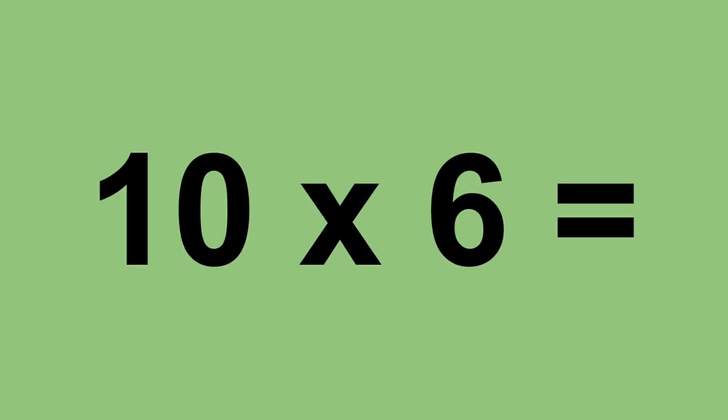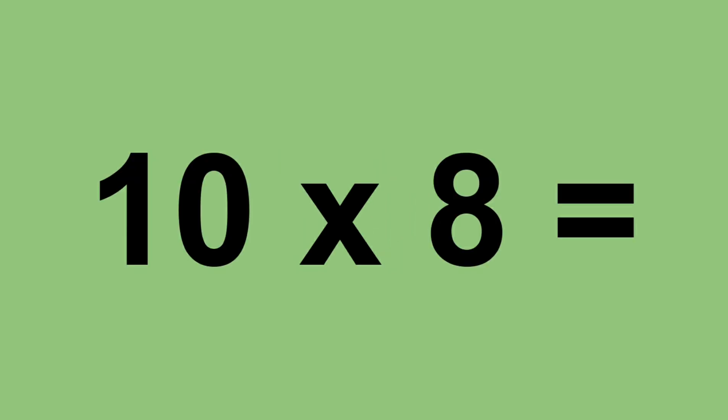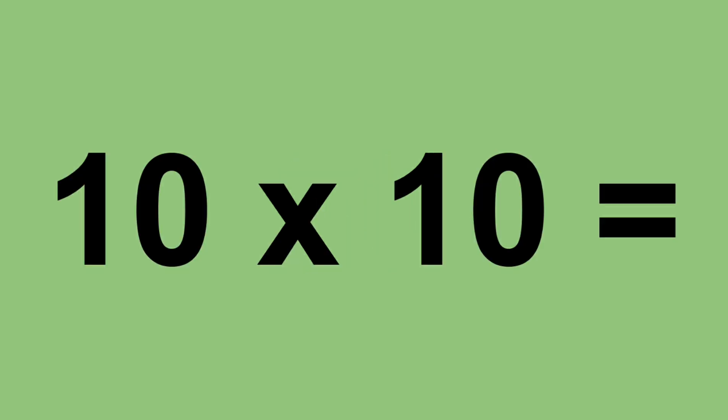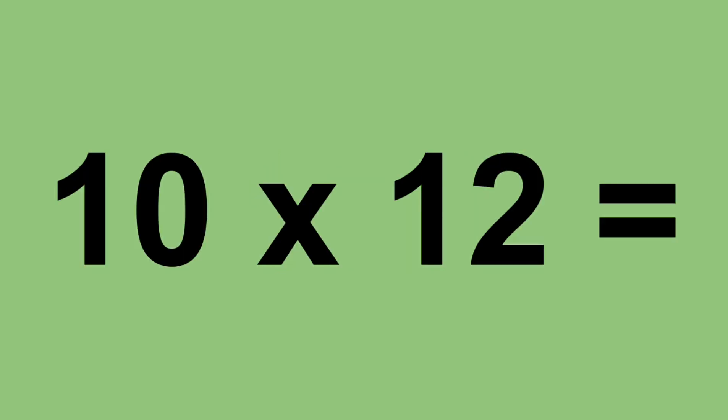Ten times six equals sixty. Ten times seven equals seventy. Ten times eight equals eighty. Ten times nine equals ninety. Ten times ten equals one hundred. Ten times eleven equals one hundred and ten. Ten times twelve equals one hundred and twenty.